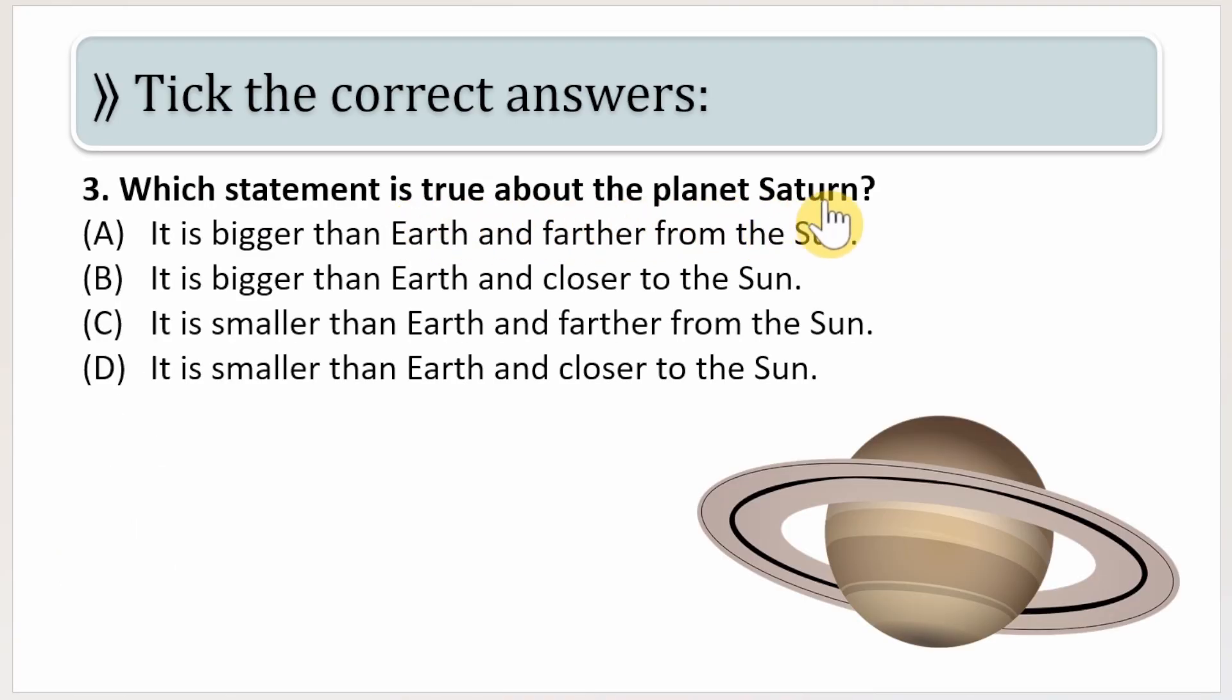Which statement is true about planet Saturn? The first option is it is bigger than Earth and farther from the Sun. It is bigger than Earth and closer to the Sun. It is smaller than Earth and farther from the Sun, and the last option is it is smaller than Earth and closer to the Sun. And your time starts now.